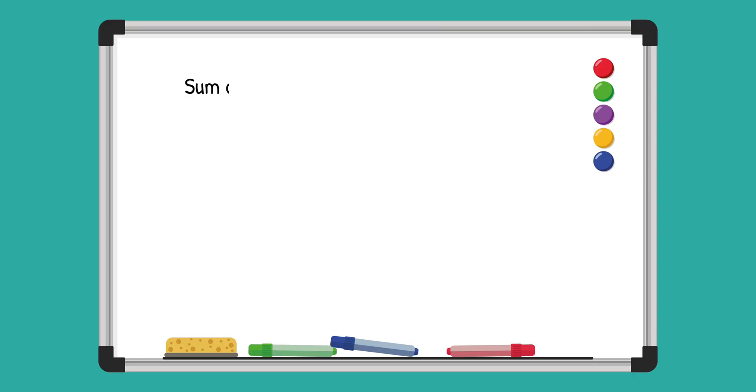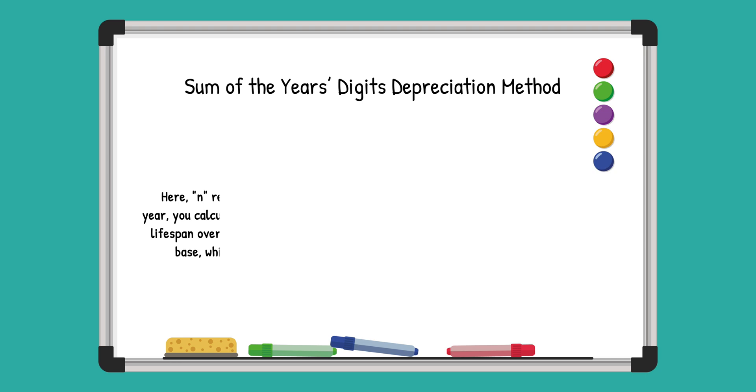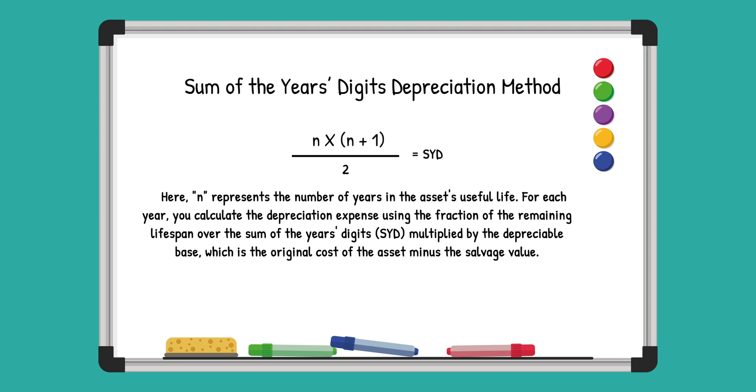In this video, we'll discuss a unique one: the sum of the year's digits depreciation method, or SYD for short. The SYD method involves adding up the digits of the asset's useful life years and then using this sum to determine annual depreciation. This results in higher depreciation charges in the early years, which then gradually decrease over the life of the asset.